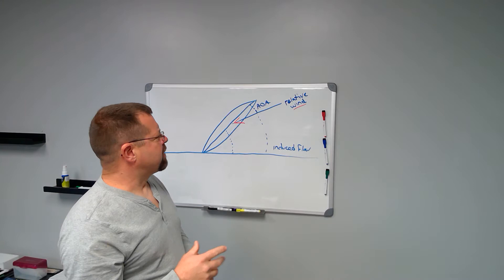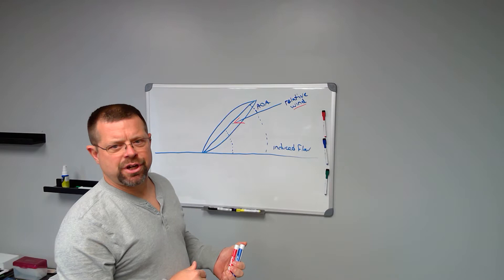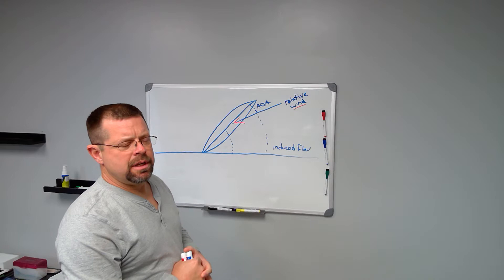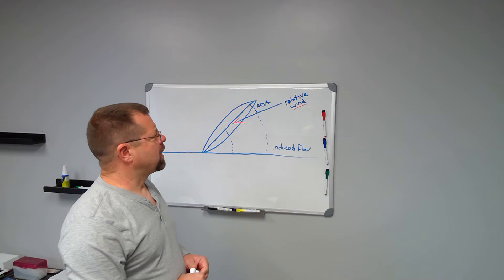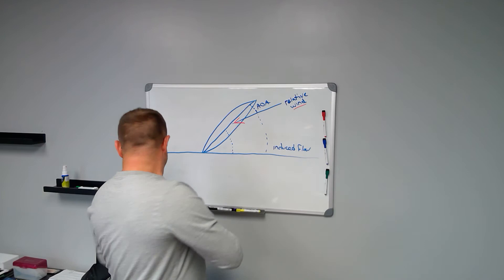As you proceed in forward flight from a hover, the relative wind will change. This is easy to understand. If you imagine in a hover the air is coming down from an angle that is more above, as you proceed down the runway into forward flight, this relative wind is starting to come in at a different angle.